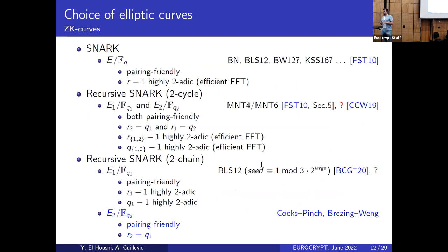For efficient SNARK implementation, the subgroup order minus one must be highly 2-adic — divisible by a high power of two — to support efficient FFT-based polynomial arithmetic using radix-2 FFTs. For two-chains (recursive chains), we look at cycles where the subgroup order of one curve equals the base field of the other and vice versa. Unfortunately, only MNT4 and MNT6 cycles are known for this, and they are not efficient at 128-bit security due to embedding degrees of 4 and 6.